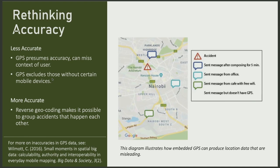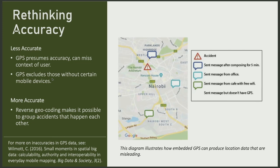Often when I discuss this research project, the first question I'm asked about is the accuracy of the geodata. But what do we mean when we talk about accuracy? Accurate for whom and for what purpose? In this question, there is a presumption that embedded GPS data is more accurate, and I want to push back on that. An embedded location only tells us where the device was when it sent a message. By the nature of crowdsourcing, users are not in the exact same location of the event they are reporting.